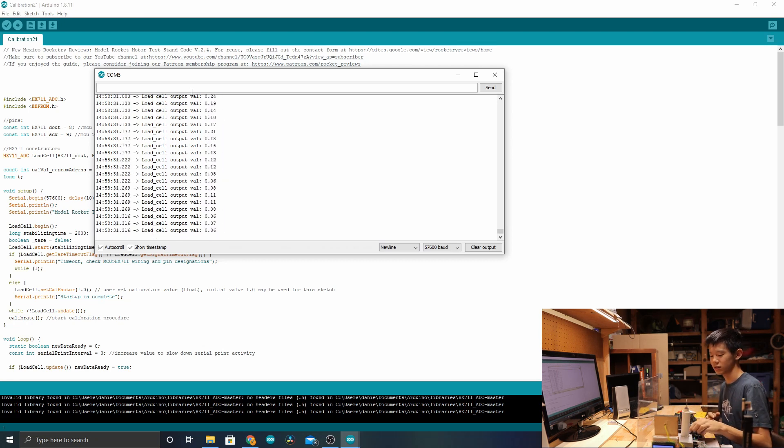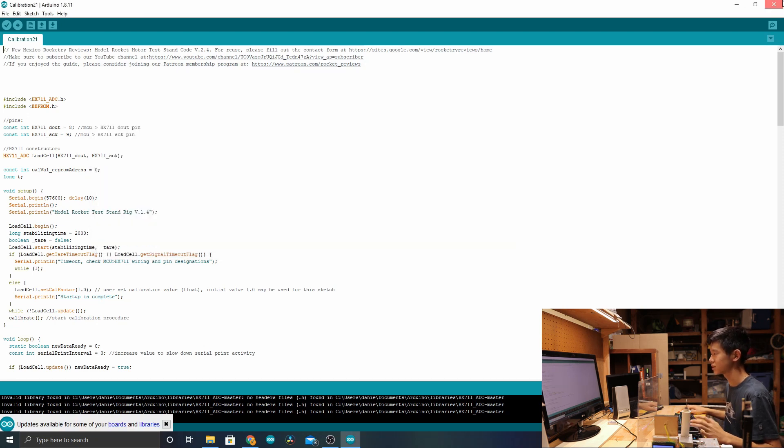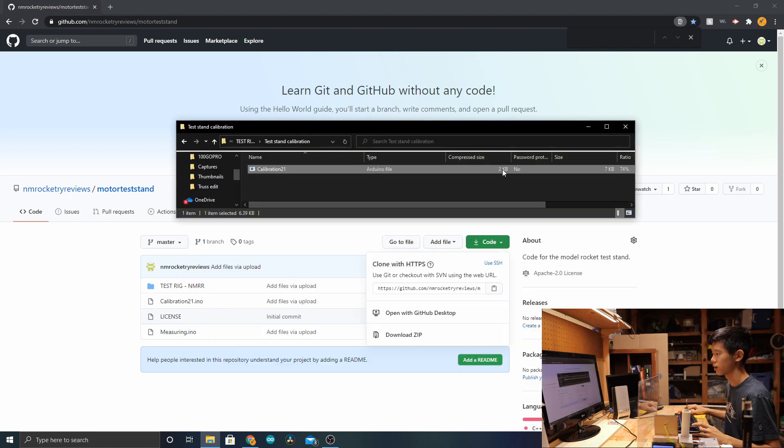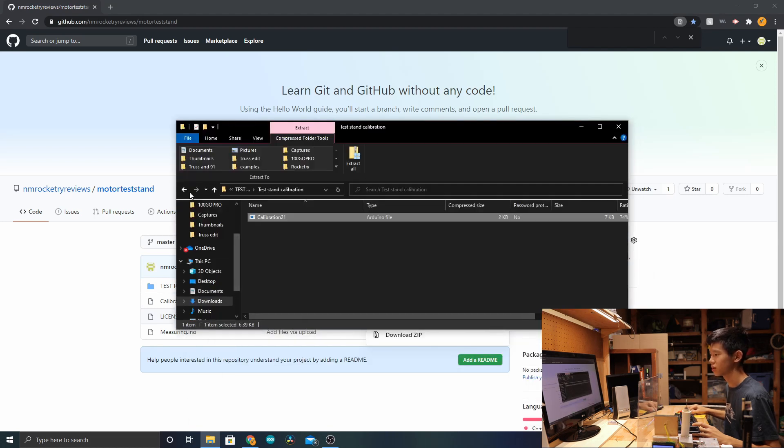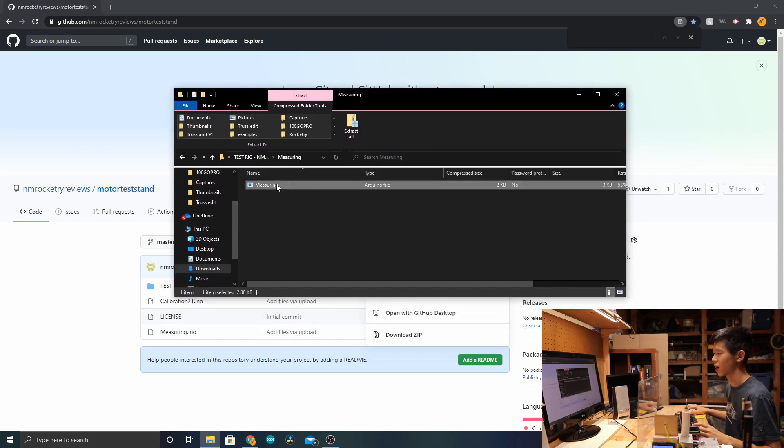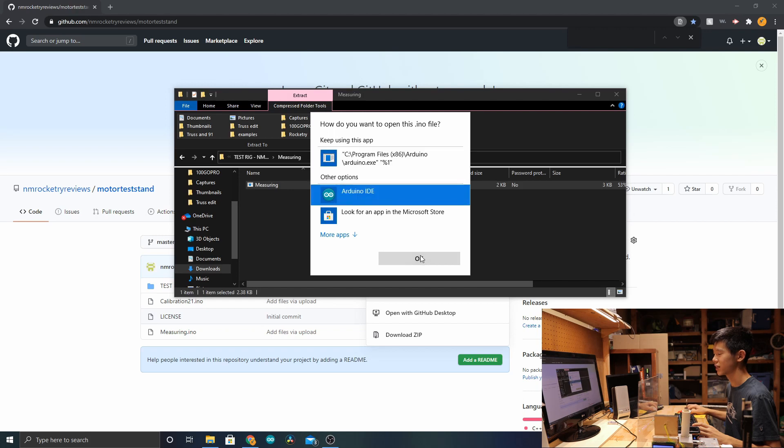Now we're going to close that, go back to files, and go back into the folder. Open measuring. Open this .ino file using the Arduino IDE.